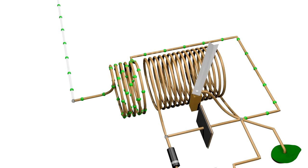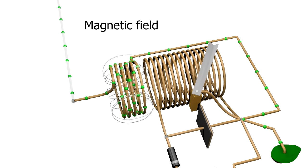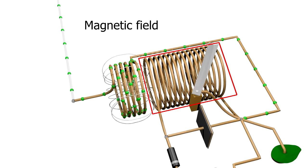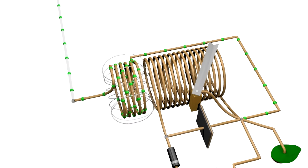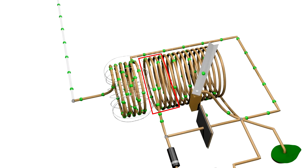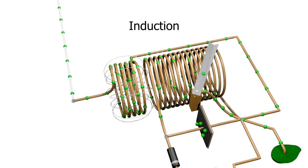This movement of electrons through the coil causes a fluctuating magnetic field to appear around the coil. The second coil is located near the first coil, but they're not connected together. However, the fluctuating magnetic field from the first coil overlaps the second coil. This is called induction.